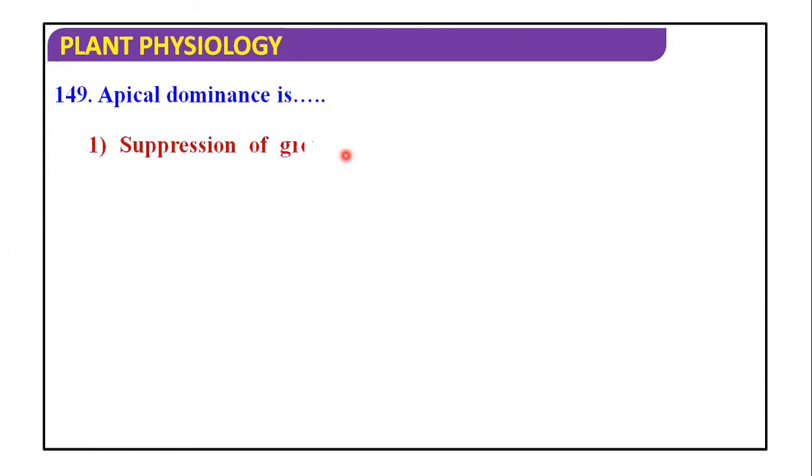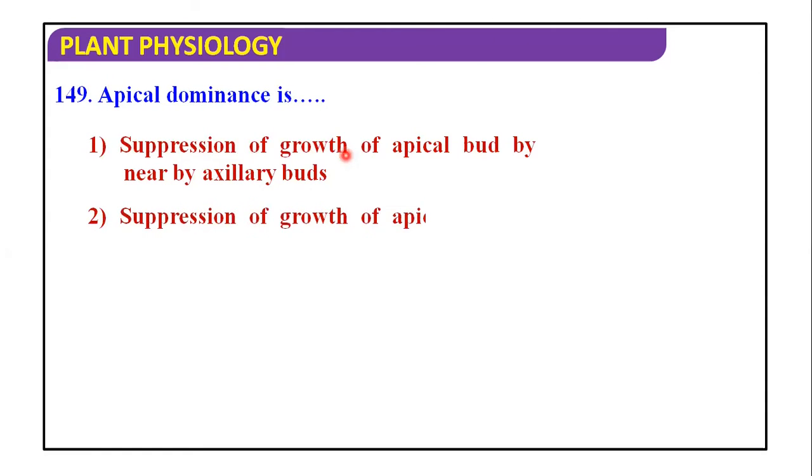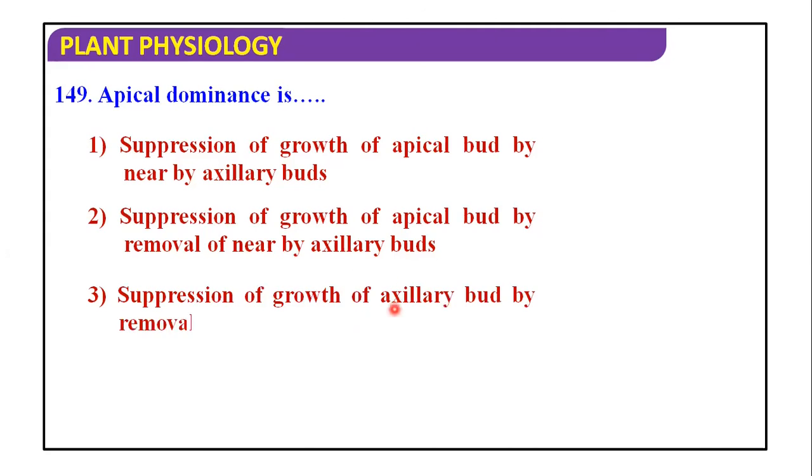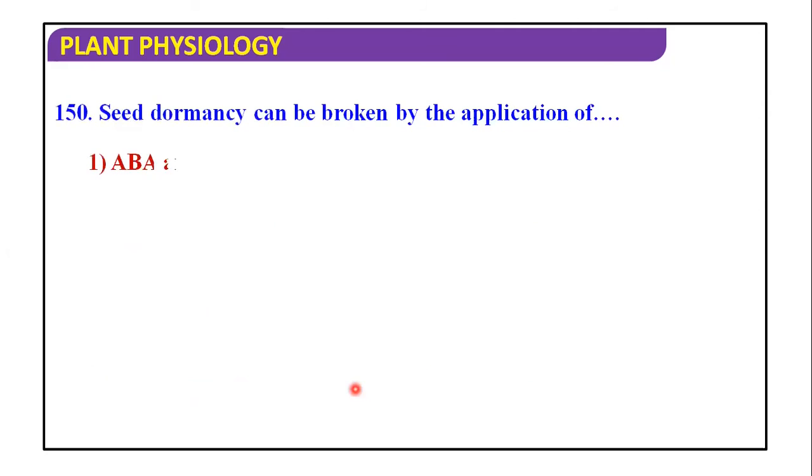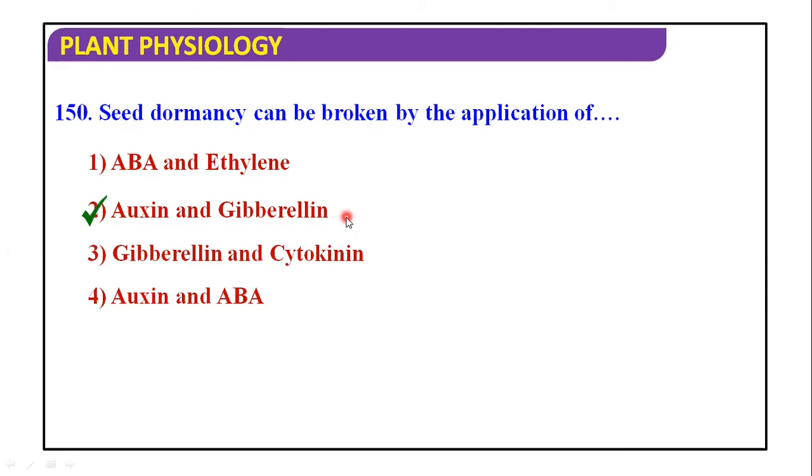Apical dominance is suppression of growth of apical bud by nearby axillary bud, suppression of growth of apical bud by removal of nearby axillary bud, suppression of growth of axillary bud by removal of apical bud, and suppression of growth of nearby axillary bud by apical bud. The answer is suppression of growth of nearby axillary bud by apical bud. Seed dormancy can be broken by application of abscisic acid, ethylene, auxin and gibberellin, gibberellin and cytokinin, auxin and abscisic hormone. And the answer is auxin and gibberellin.